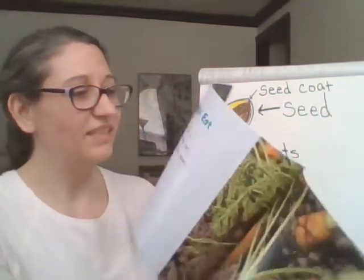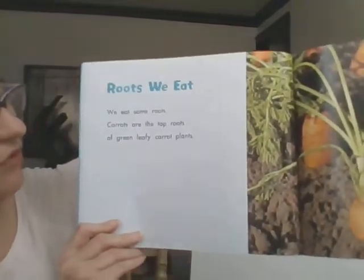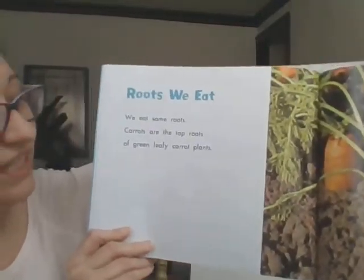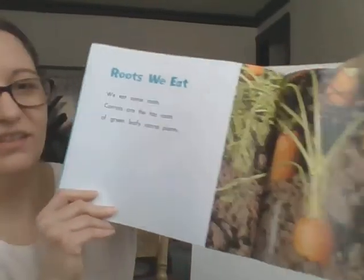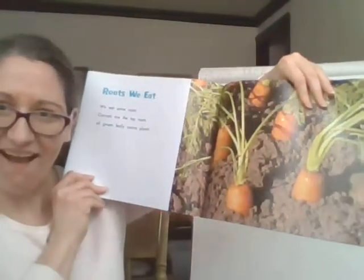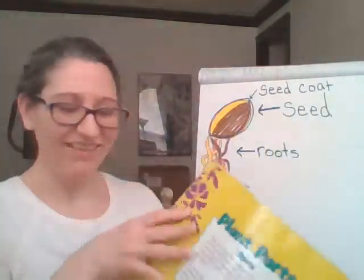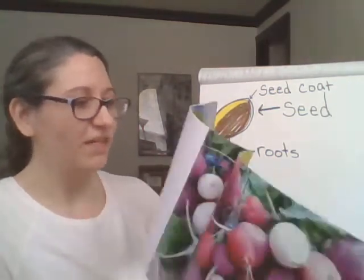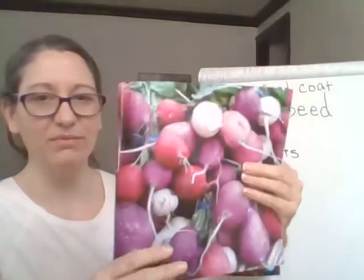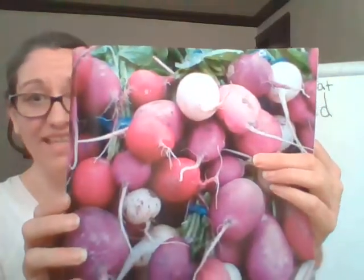'Roots we eat. We eat some roots. Carrots are the tap roots of green leafy carrot plants.' That's the root — that's the part we eat. 'Turnips are root vegetables. They taste good in soups and salads.'